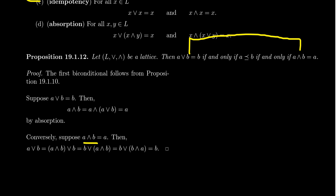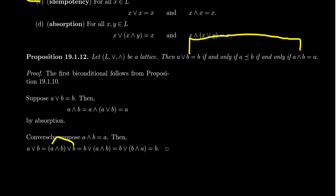The reverse direction uses essentially the same argument. Assume A meet B equals A, and consider A join B. By substitution, we replace A with A meet B, giving us (A meet B) join B. Because of commutativity, we can move B to the front to get B join (A meet B), and then rewrite A meet B as B meet A using commutativity. Then by absorption, this equals B. So commutativity is required to move things around, but because of the commutativity axioms, left absorption implies right absorption.